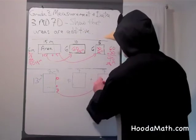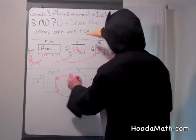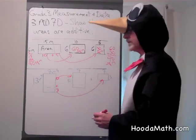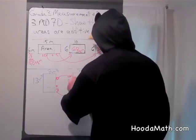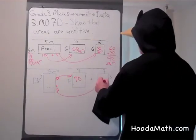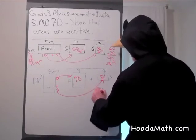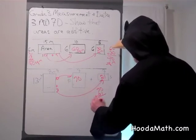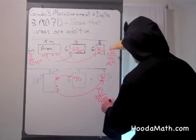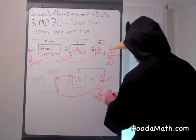Bring the smaller one over here and the larger one here. 10 times 7 is 70, and 3 times 7 is 21. We can add them together. 70 plus 21 is 91 square meters.